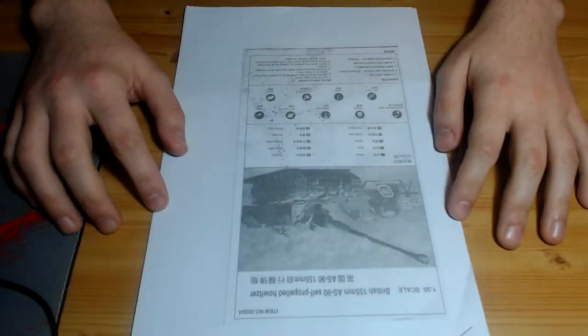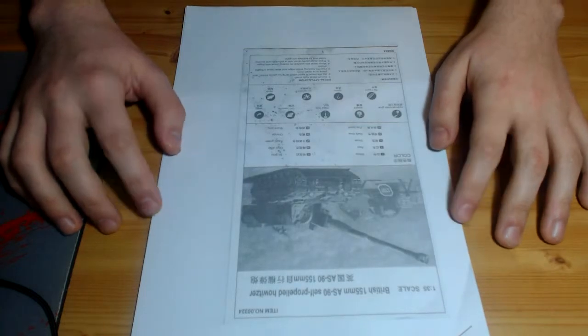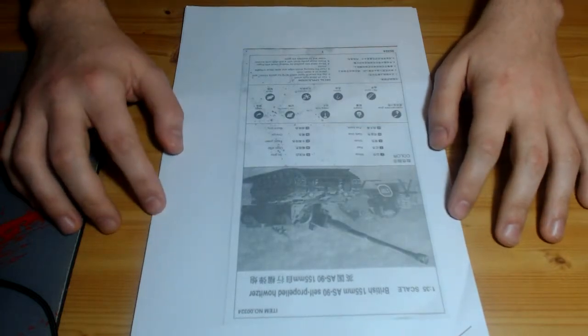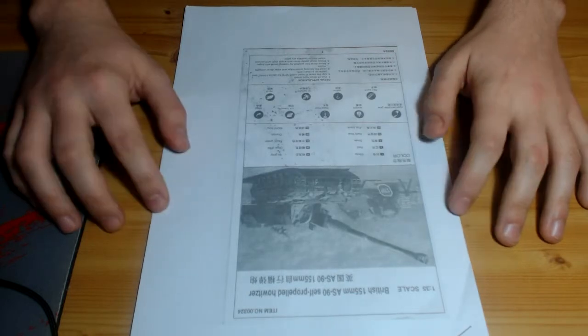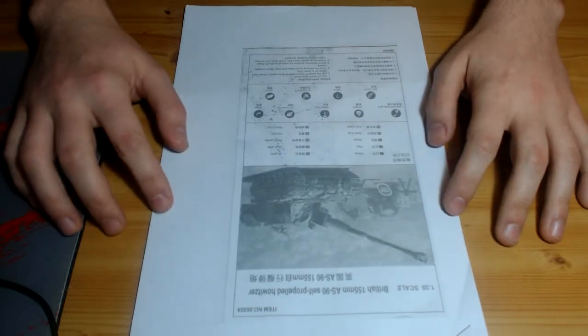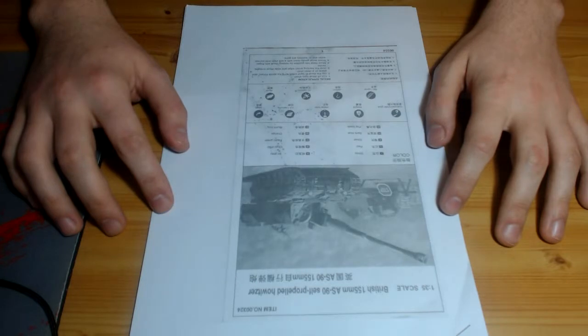Hello ladies and gentlemen and welcome to my second video on the AS90 British self-propelled howitzer which I am constructing for the International Scale Modeler Steel Rain SIG.